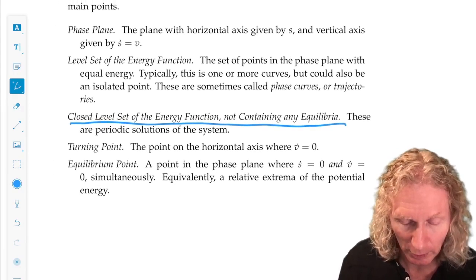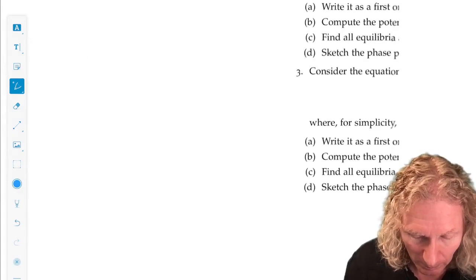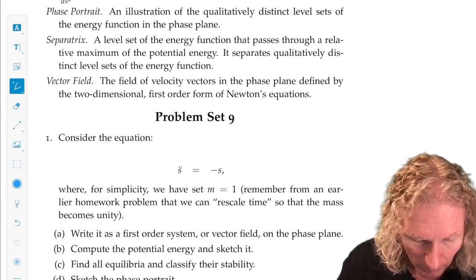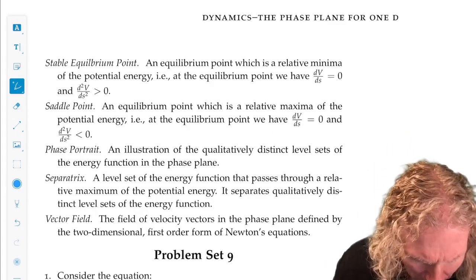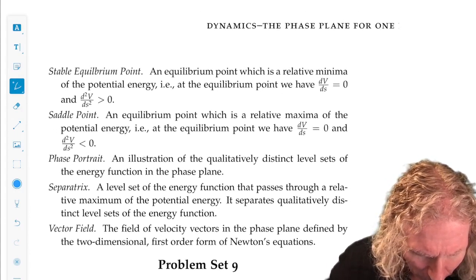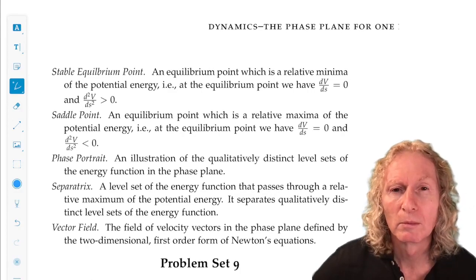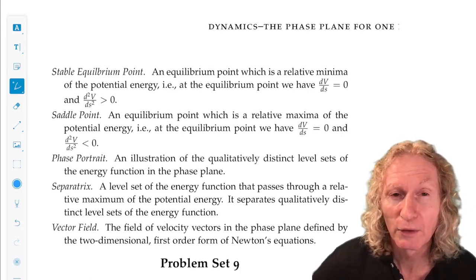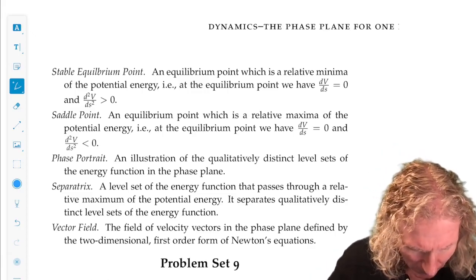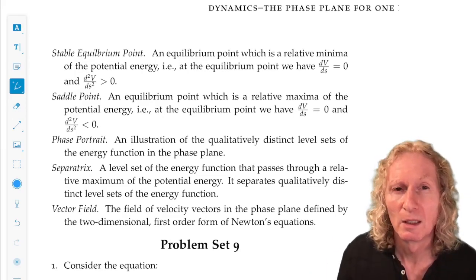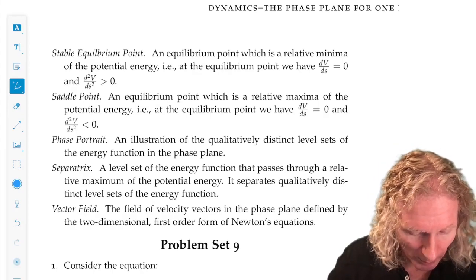Equilibrium point, I just talked about what that is. Stable equilibrium point, that's where we have potential minimum, a saddle-type equilibrium point where we have a local maximum. I should have said local minimum, because I don't know if there's a global minimum.